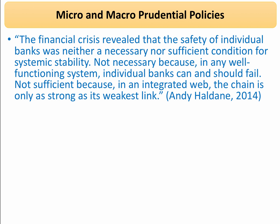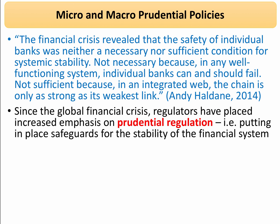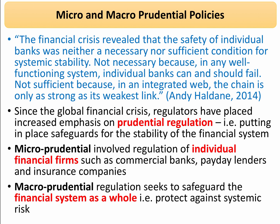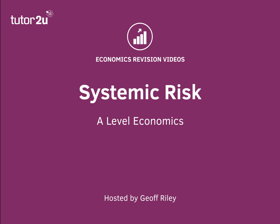That, to my mind, gives you a brilliant quote on systemic risk: the chain is only as strong as its weakest link. And so regulators have stepped in. In the last 10 years, they've brought in much more regulation designed to make the financial system more stable and less prone to systemic risk. Micro prudential is the regulation of individual financial firms — payday lenders, commercial banks, hedge funds, insurance companies. Macro prudential, through things like liquidity ratios and stress tests of the banking system as a whole, tries to safeguard the financial system in its widest sense to protect against systemic risk. If you get a question on financial economics, systemic risk is a key concept that you really will want to discuss. So I hope this short revision video has been useful for you.